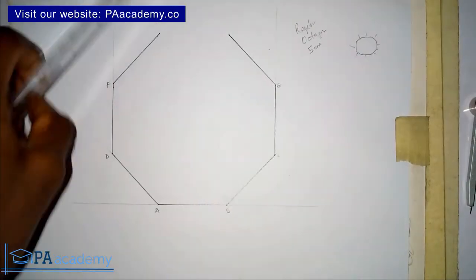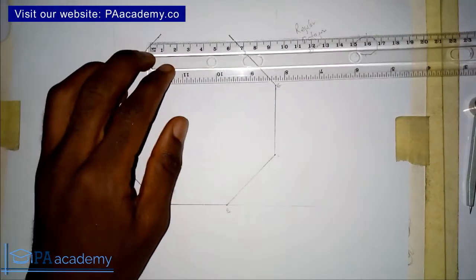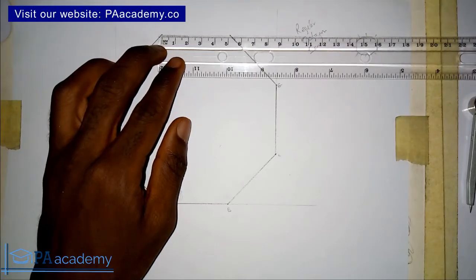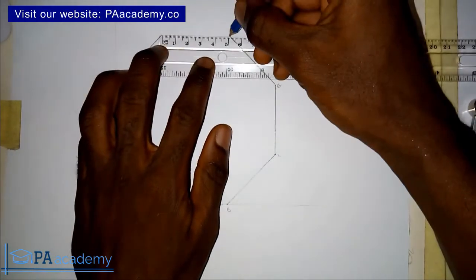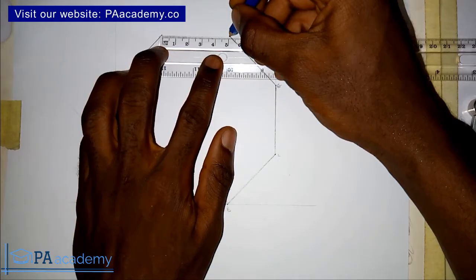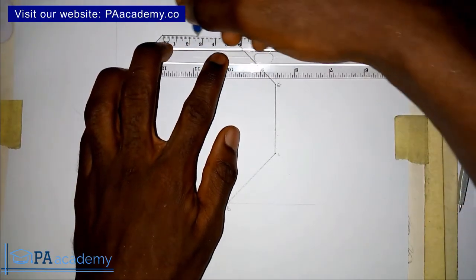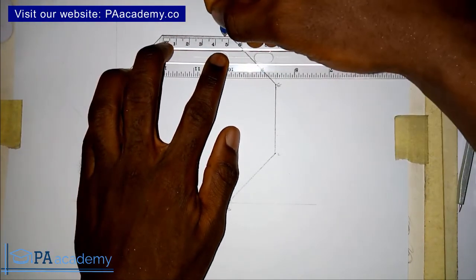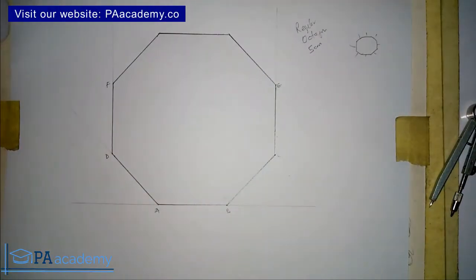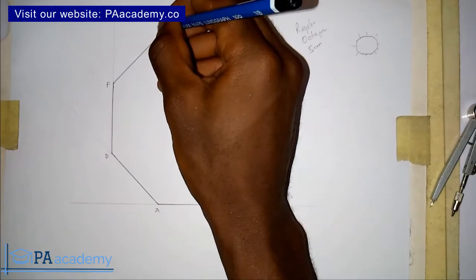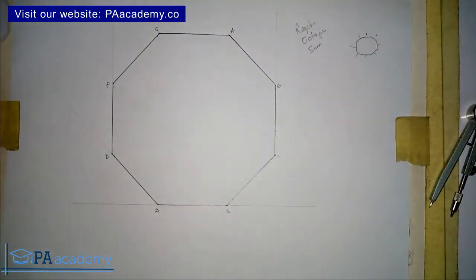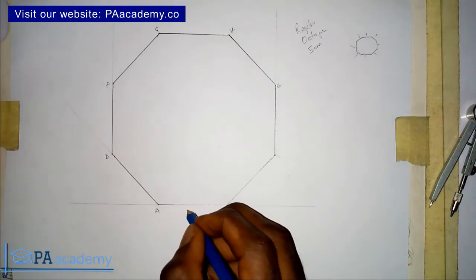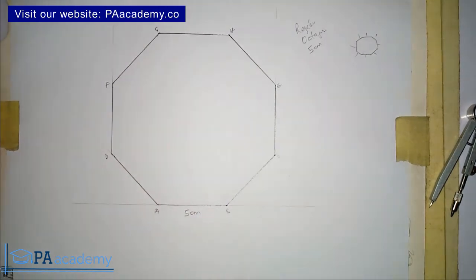Since we now have one side left, we can easily connect them. Place our ruler on it and you will see that it gives us 5 cm. Go ahead and join it. Let's call this G and H. With this, we've been able to draw a regular octagon with a side of 5 cm.